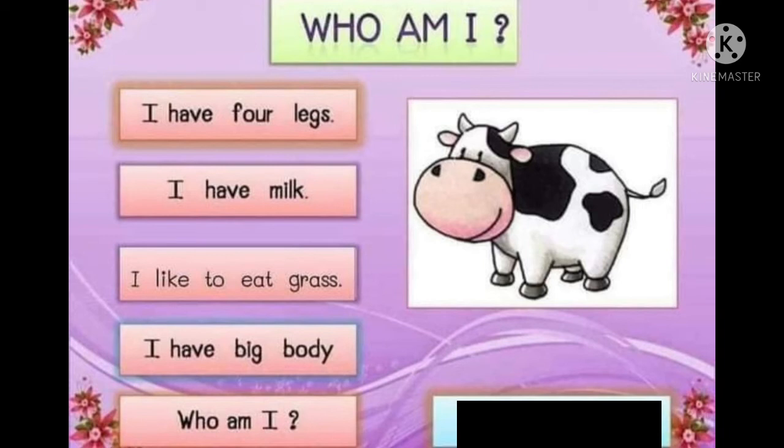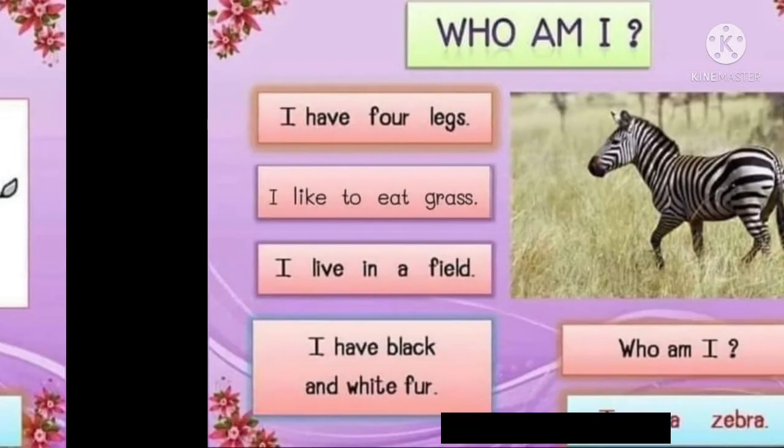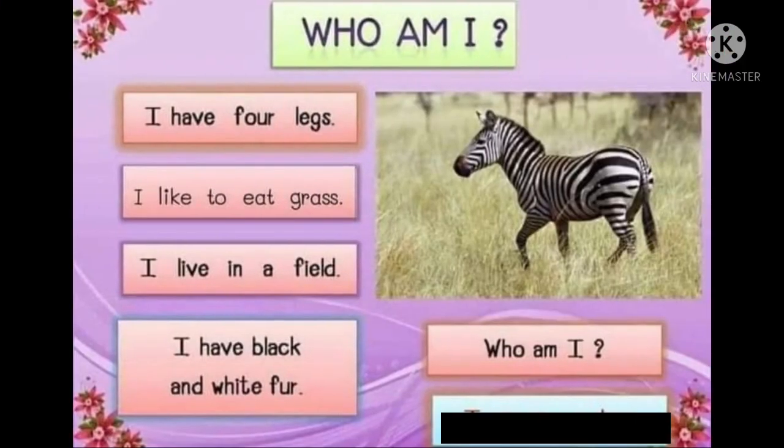I have four legs, I have milk, I like to eat grass, I have a big body. I am a cow. I have four legs, I like to eat grass, I live in a field, I have black and white stripes.